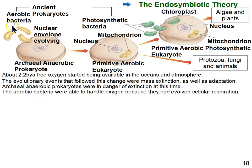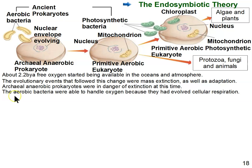The aerobic bacteria would be the other branch of prokaryotes, and these had evolved the ability to handle oxygen. Through the process of cellular respiration, they had evolved cellular respiration, which uses oxygen to break down molecules to get energy. The important thing is that they were not killed by oxygen — they actually evolved a way to use oxygen to their advantage.